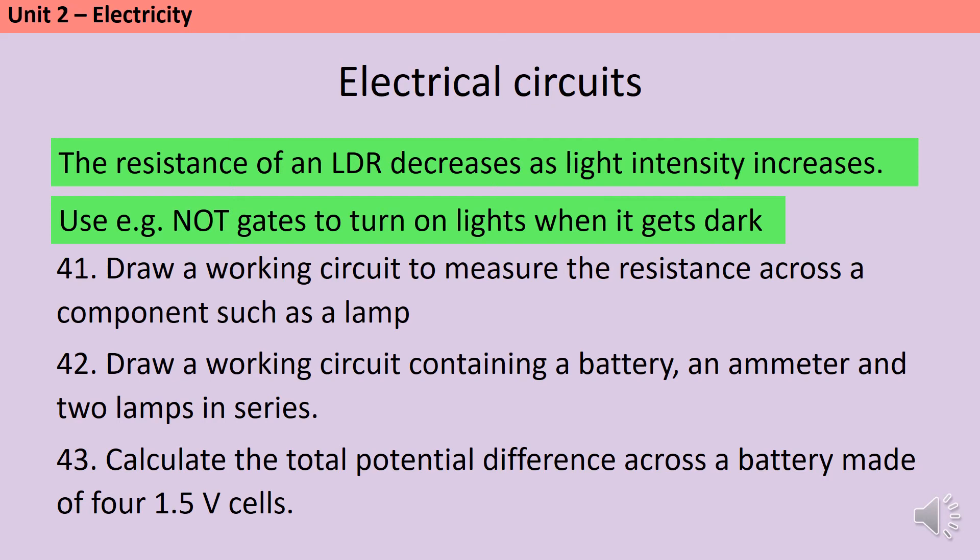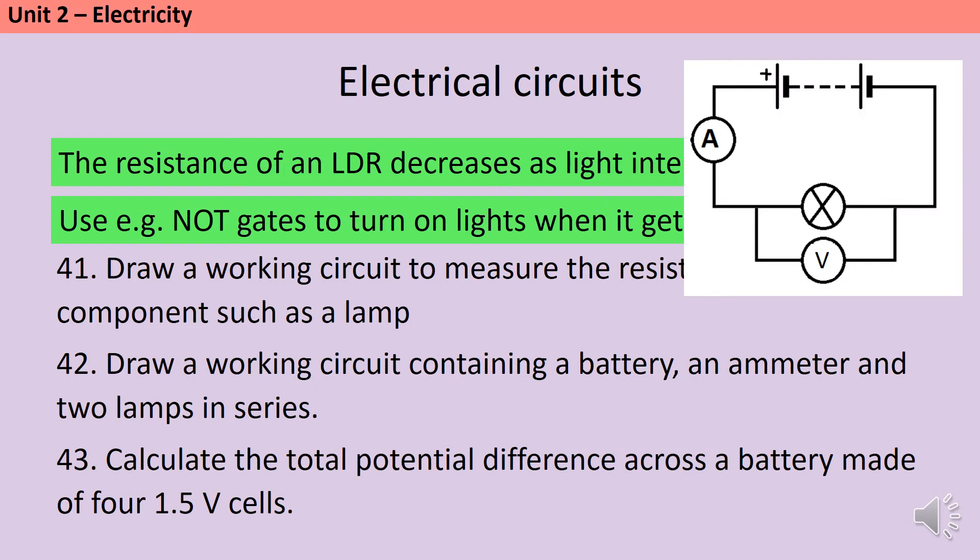To measure the resistance across a component, we use a very similar setup to how we measured it across the wire. So here you've got a lamp with a voltmeter across the component and the ammeter just in series, and you can then use the readings on the voltmeter and the ammeter to calculate what the resistance would be.